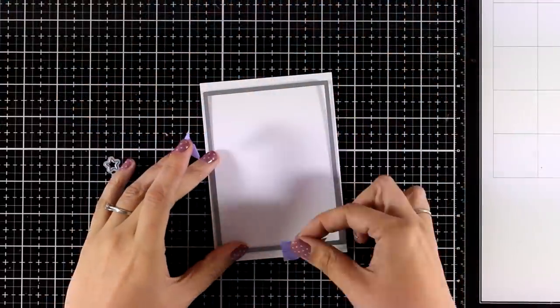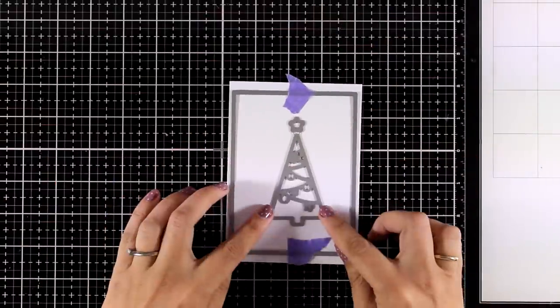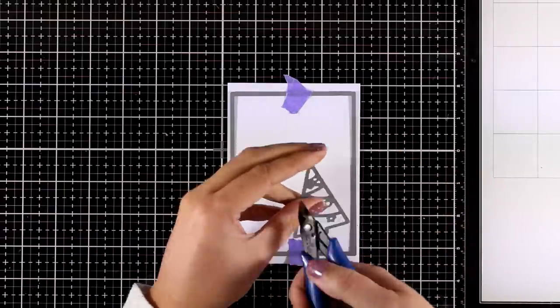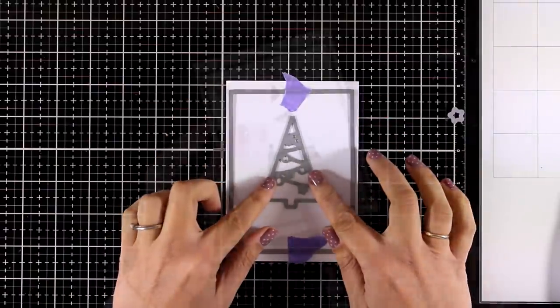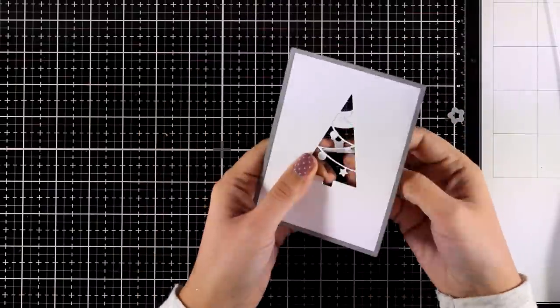Now moving on to the second card again I am going to use one of my stitched rectangle dies and on the inside I am going to use another die from the latest release. This is called Christmas tree window and it comes with two dies, the Christmas tree as well as a little star.